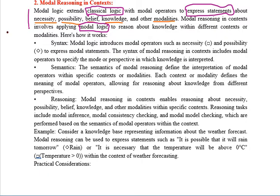This modal logic is extended from classical logic, and it is also used to express statements like first order logic. The types of statements it expresses are necessity, possibility, belief, and knowledge. Knowledge is nothing but information. Possibility means how many ways are there to get a particular thing. Necessity means what is absolutely required.